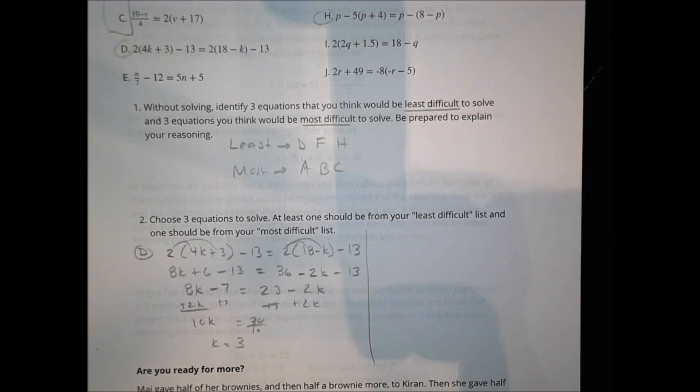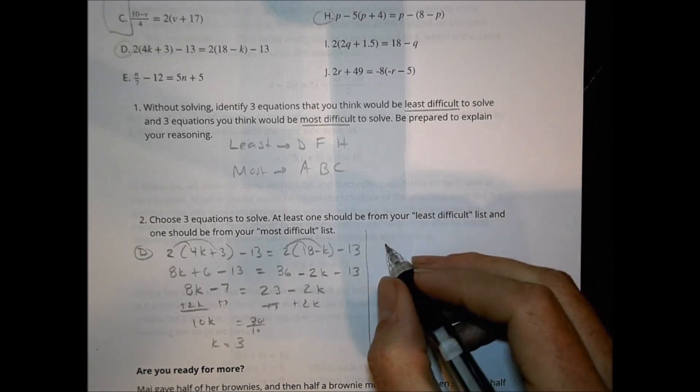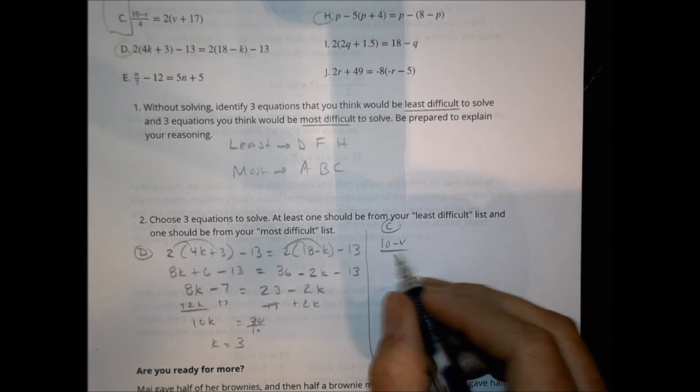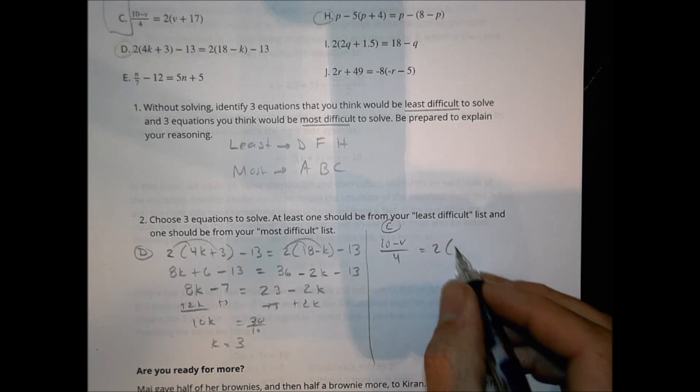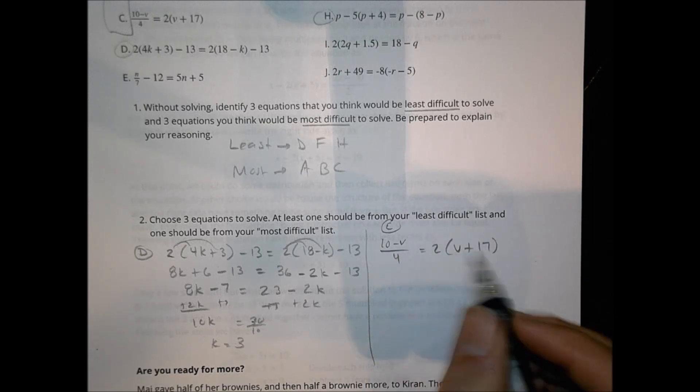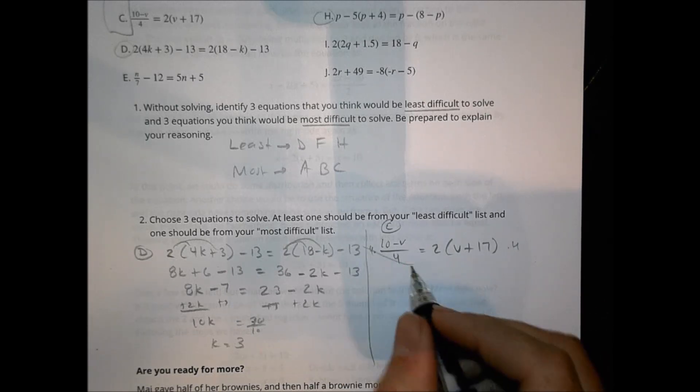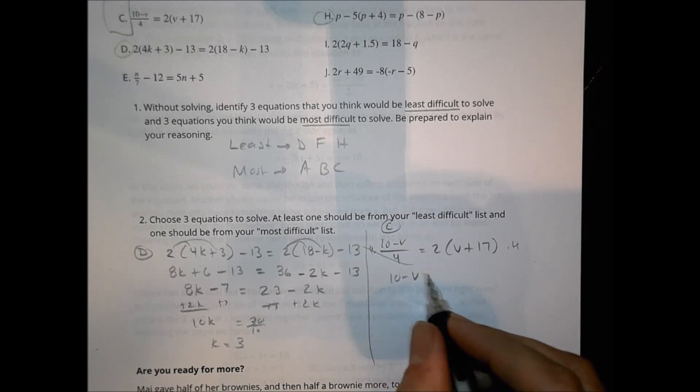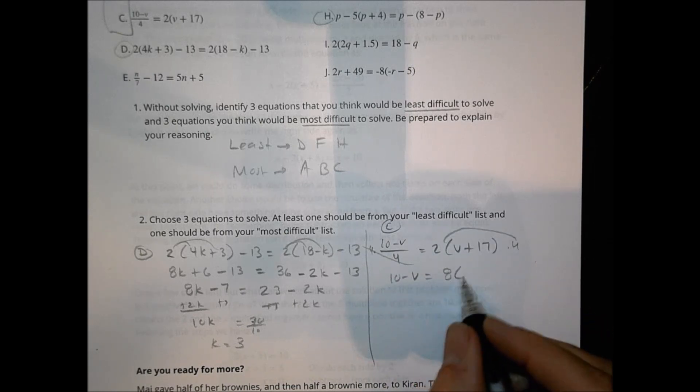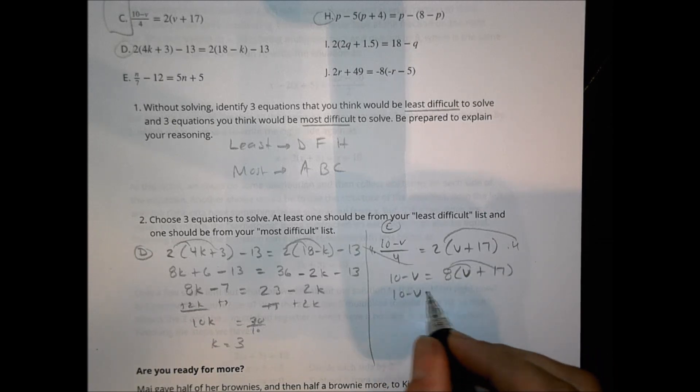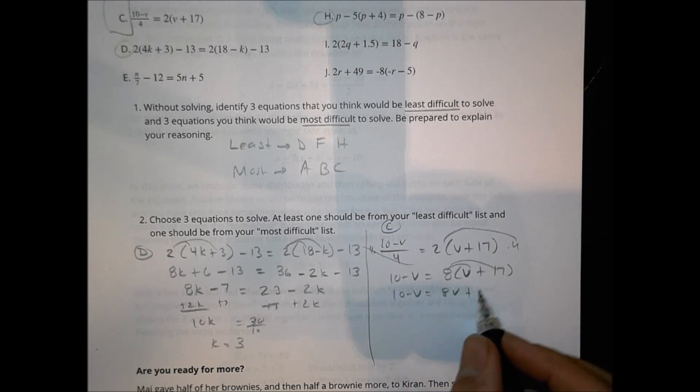To solve letter C, one of the ones that was maybe a little more complicated perhaps. Let's write that out. We have 10 minus V. This is a letter C, by the way. 10 minus V over 4 equals 2 times V plus 17. I'm going to first of all go ahead and multiply both sides by 4. So this eliminates that. So I have 10 minus V equals, distribute the 4 times 2, 8 times V plus 17.